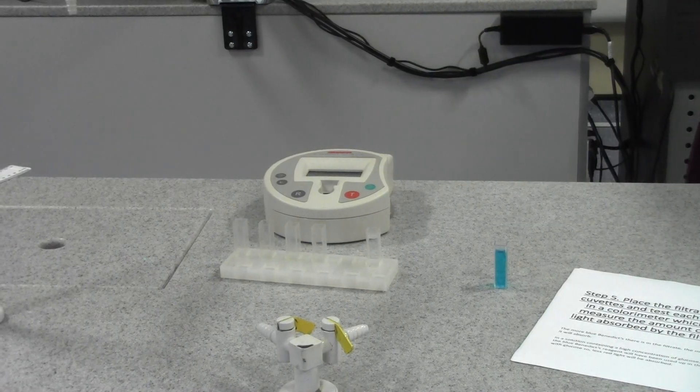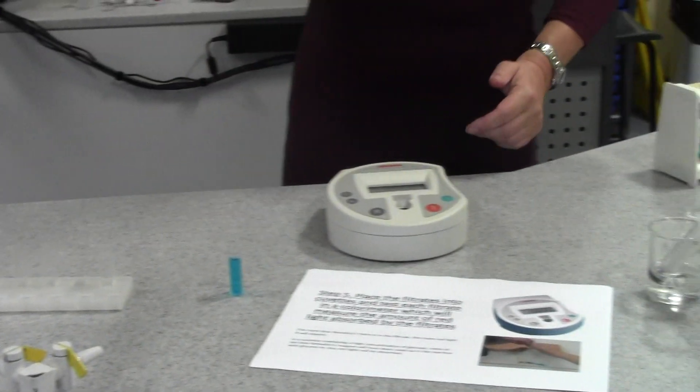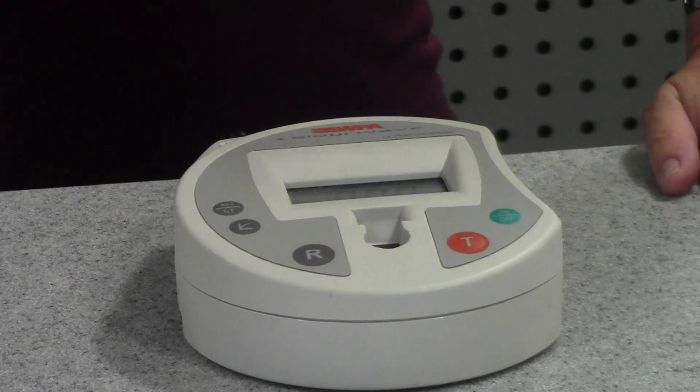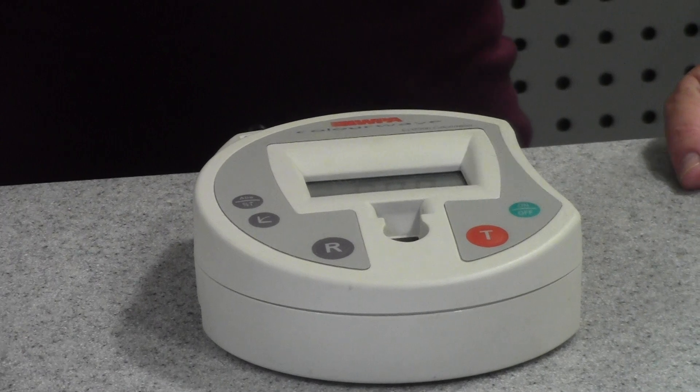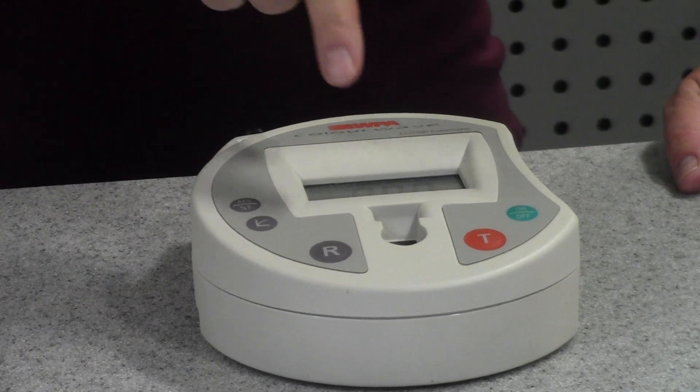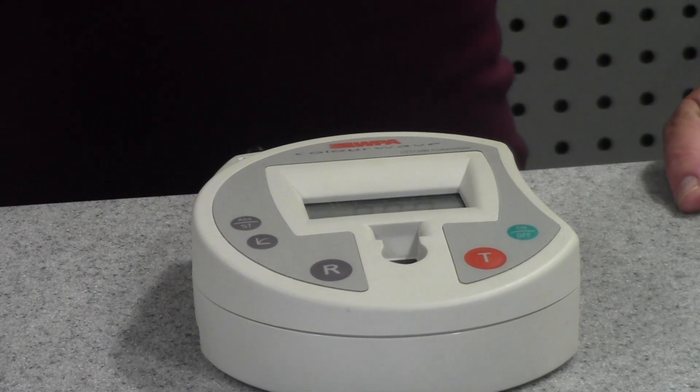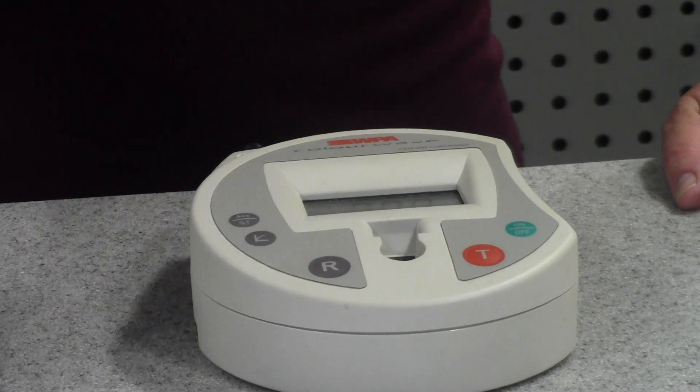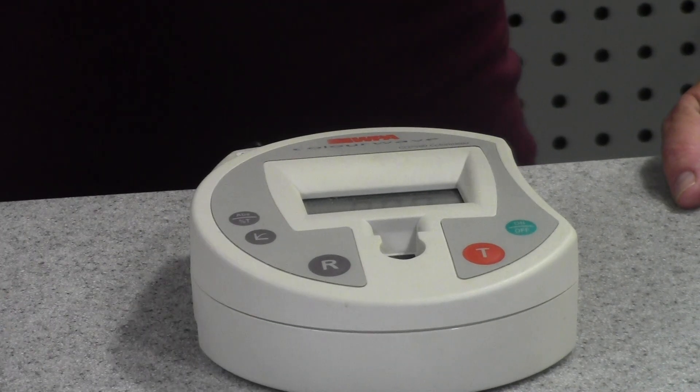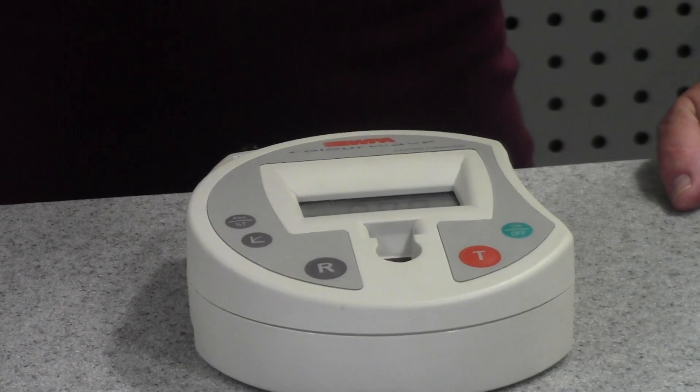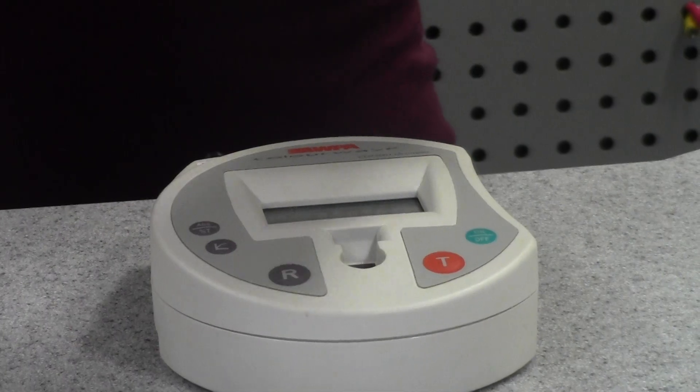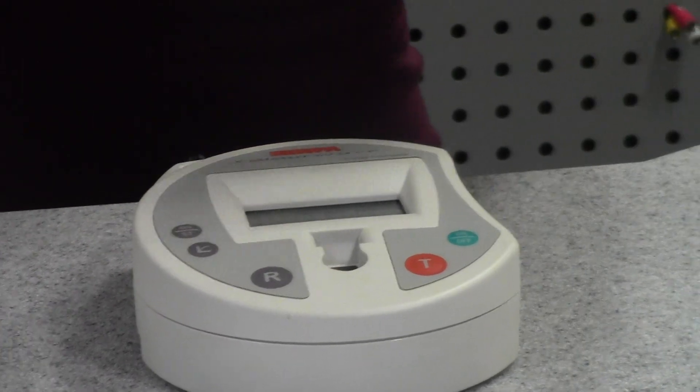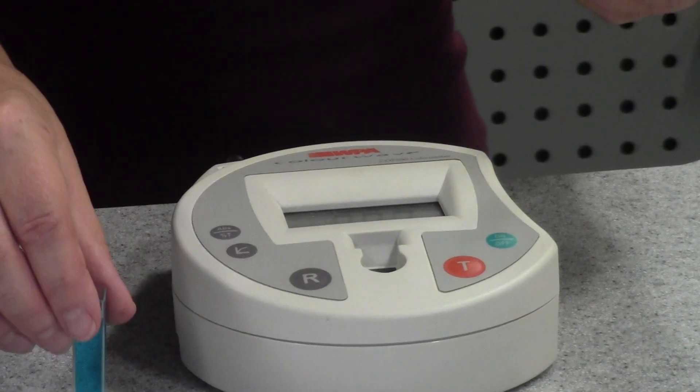This is a colorimeter and the colorimeter measures the intensity of color in solutions. This one I've set it with a red filter so this is going to shine a red light through the samples I place in there and it's going to work out how much of that red has been absorbed. Now because this has got a lot of blue in it it should absorb a lot of red light.